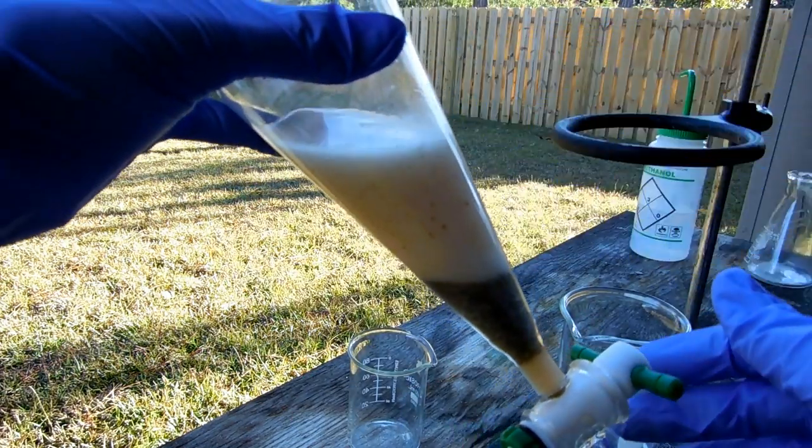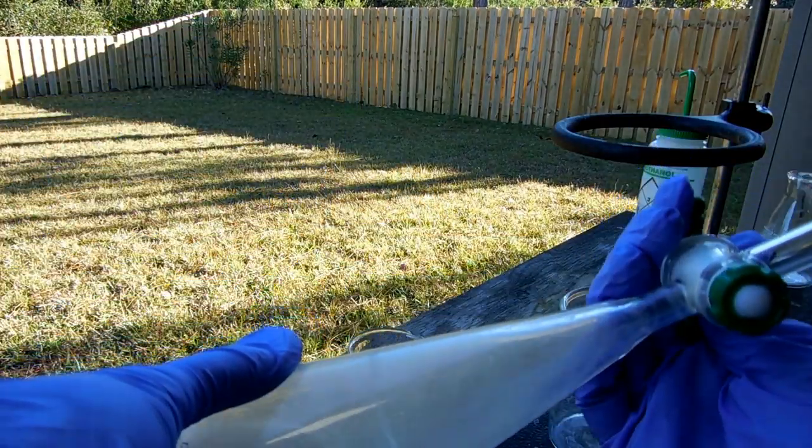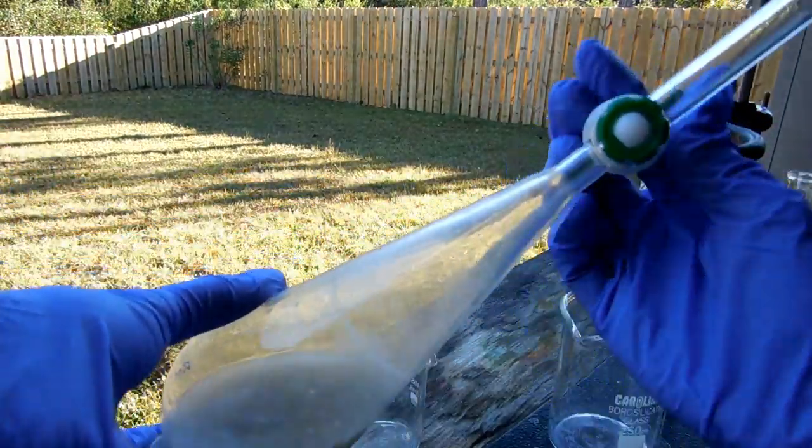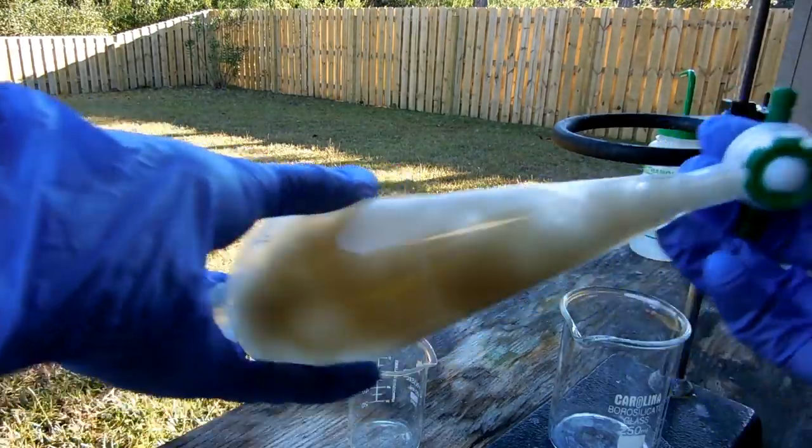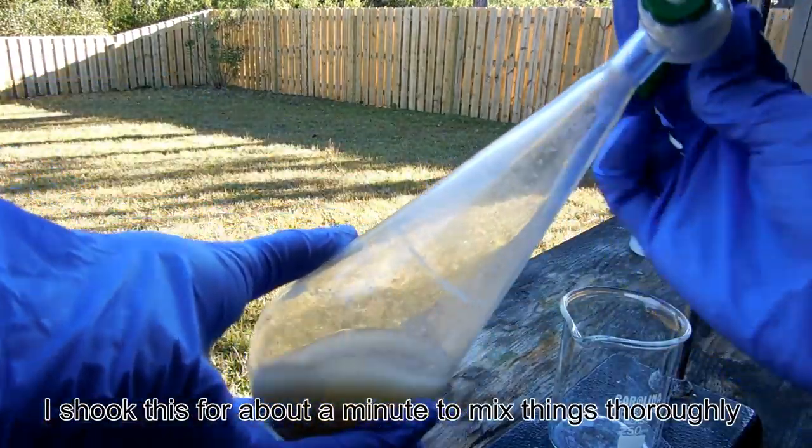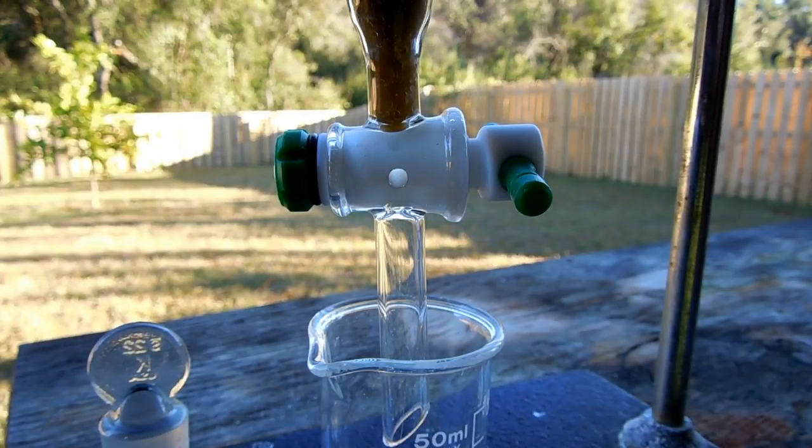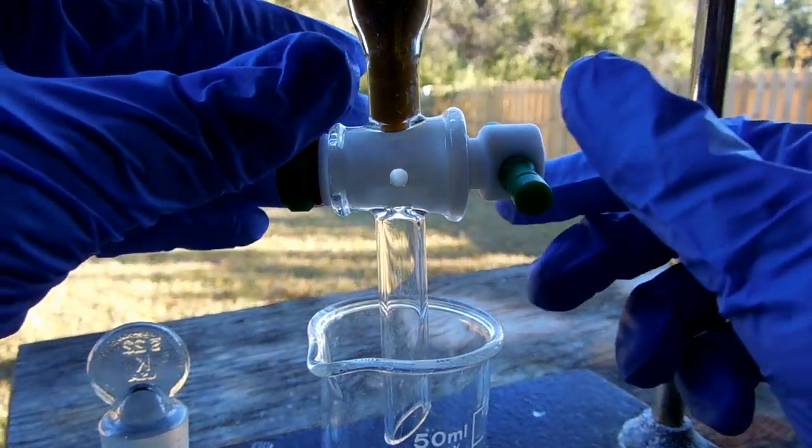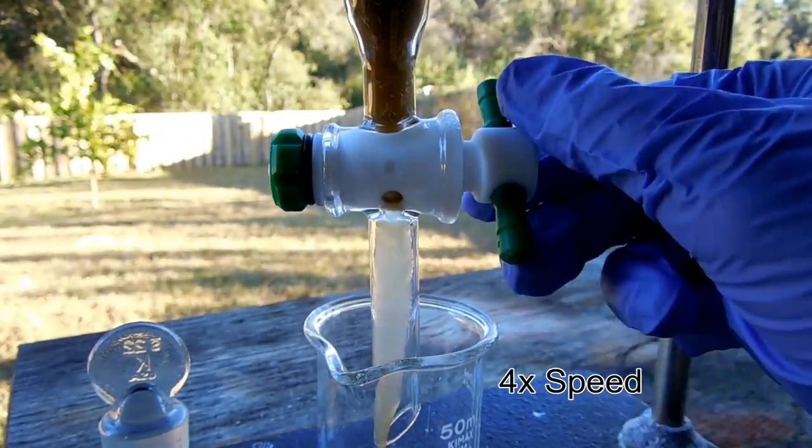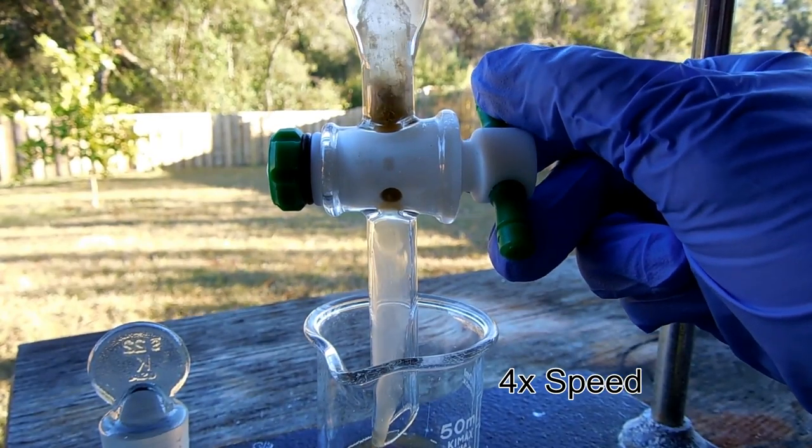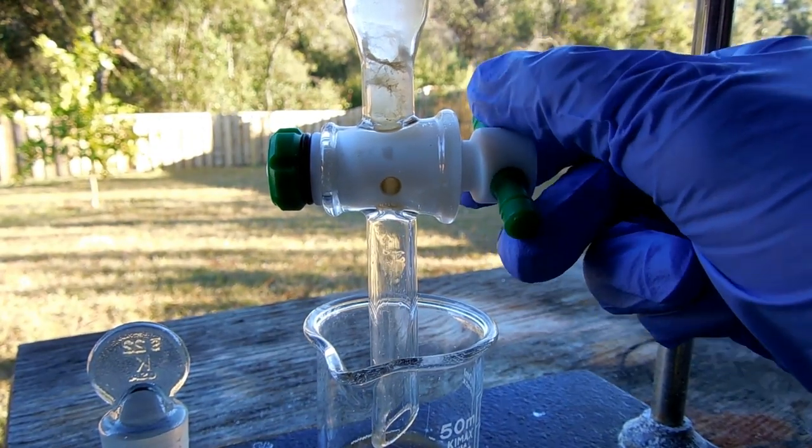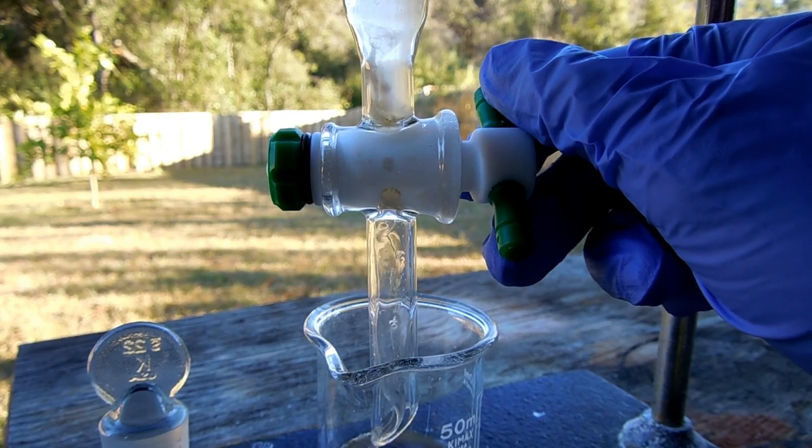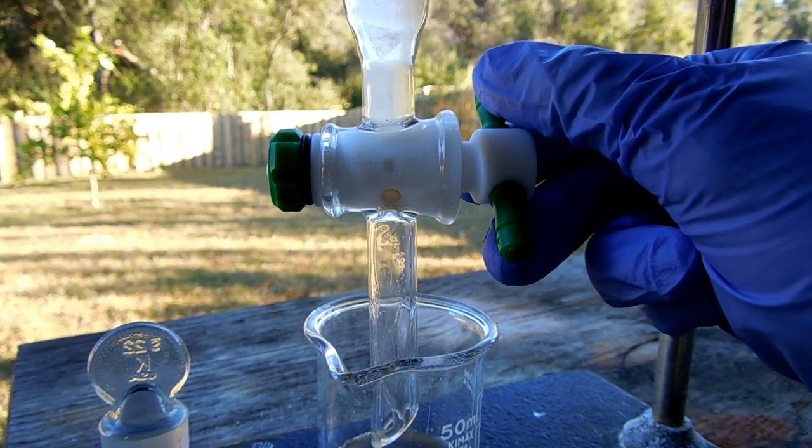When you're shaking anything in a sep funnel like this you want to vent often even if you don't expect it to produce any gases. It can still surprise you sometimes. I let my oil sit and separate for 10 or 15 minutes and the oil is heavier than the aqueous layer so we'll drain that. It's okay if you get some of the water with it because the next step is to perform a second water wash.